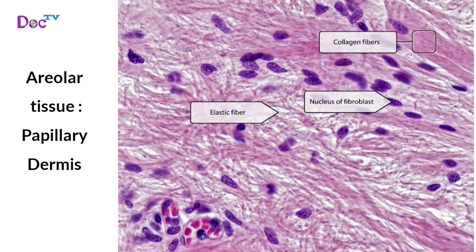Areolar tissue is found in the papillary dermis. It has a gel-like matrix with loosely arranged collagen, elastic and reticular fibers, scattered fibroblasts, macrophages and other cells. Blood vessels and interstitial fluid-filled spaces are located in the papillary layer of the dermis. This tissue supports the epithelium, cushions organs, forms the lamina propria and mucous membranes, and surrounds blood vessels and nerves.